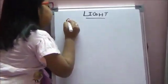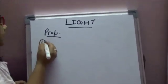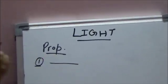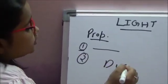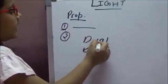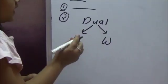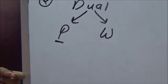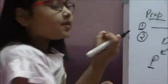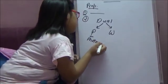Now coming to the properties of light. First, light always travels in a straight line. Second, light has a dual nature. Dual nature means that light has a particle nature and a wave nature. Particle nature means light consists of small massless particles, or particles with negligible mass, called photons.